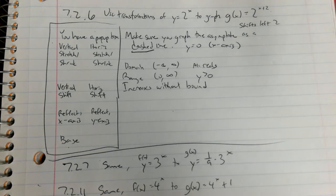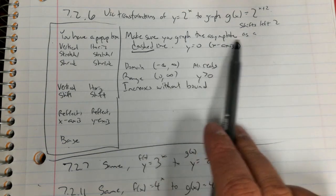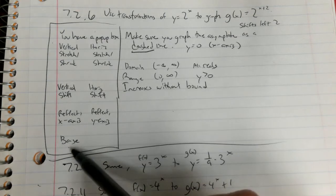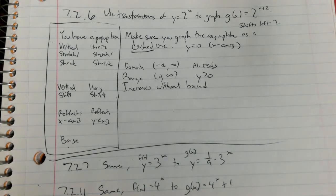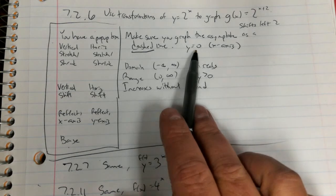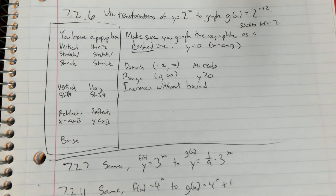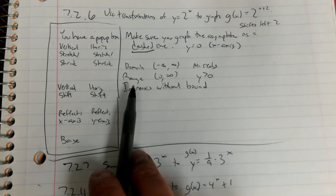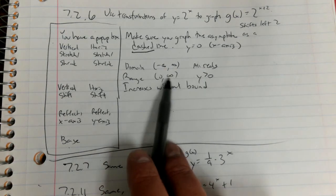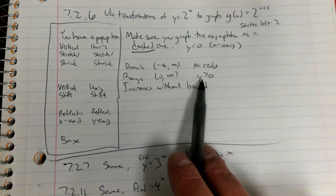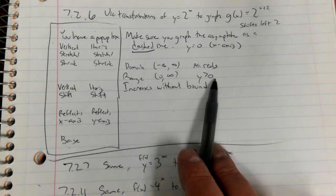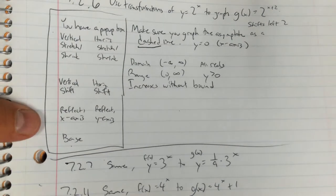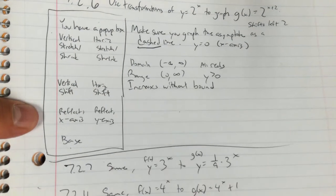The other thing after you graph it is make sure you graph the asymptote as a dashed line. Somewhere below the box you'll be able to click the dashed line and you're going to need to do y = 0, which is the x-axis. Then after that you have a couple more questions. On the domain it'd be negative infinity to infinity, which is all reals. Your range, which is 0 to infinity, because it's greater than 0 and it increases without bound. So that's the main focus of the lesson.